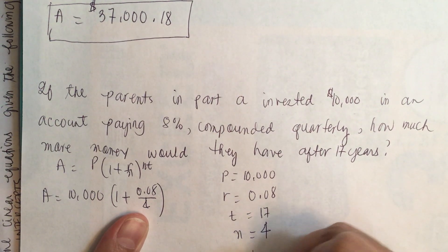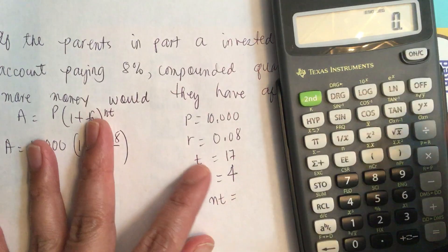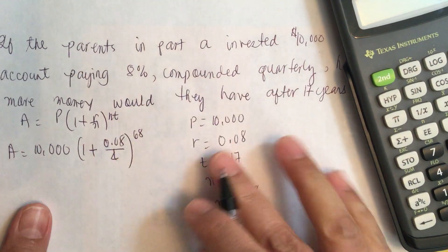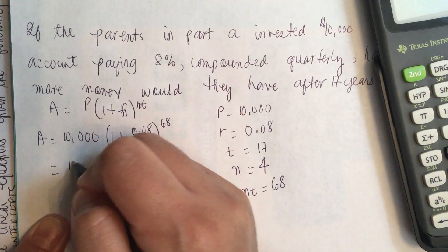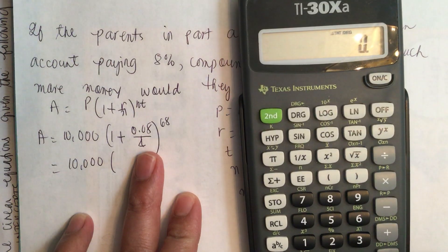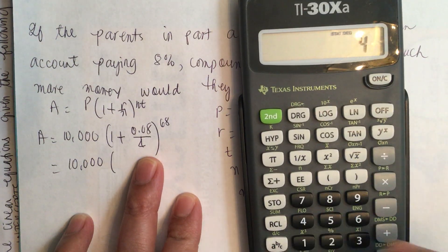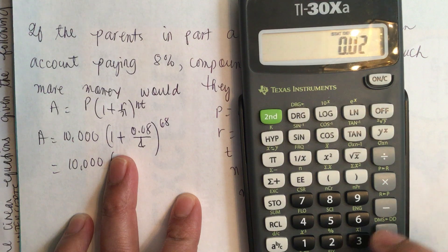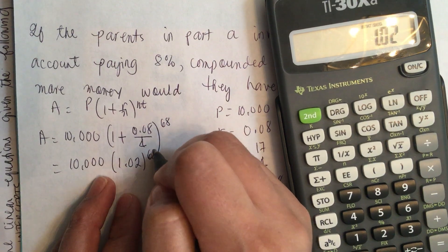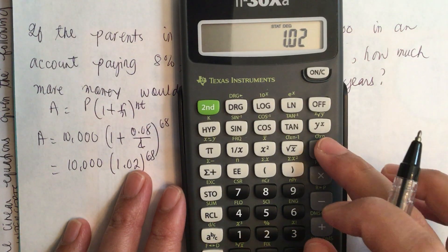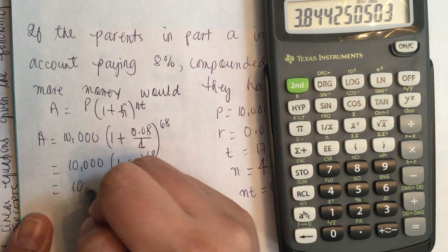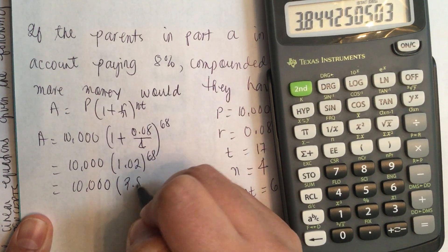We plug in our numbers: A equals ten thousand times one plus 0.08 over four, raised to the 17 times four power. So N times T equals 17 times four, which is 68. This is raised to the 68th power. Calculating: 0.08 divided by four, plus one gives us 1.02, raised to the 68th power. So this equals ten thousand times 1.02 to the 68th power.